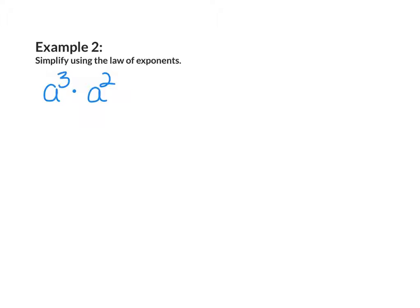Example 2: Simplify using the law of exponents. I have a to the 3rd power times a to the 2nd power. So I need to multiply a three times, times a two times. How many a's are being multiplied? 5. So it would be a to the power of 5. Or, I could just add my exponents — 3 plus 2 gives me 5 — that would still give me a to the power of 5.